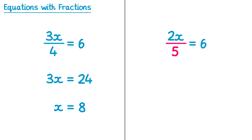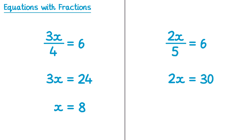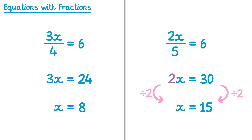Now let's try a second example. On the bottom of the fraction we have a 5, meaning 2x divided by 5. The inverse of dividing by 5 is multiplying by 5, so we multiply by 5 on both sides. On the left this leaves 2x, and on the right 6 times 5 is 30. Then we divide by 2: 2x divided by 2 is x, and 30 divided by 2 is 15.